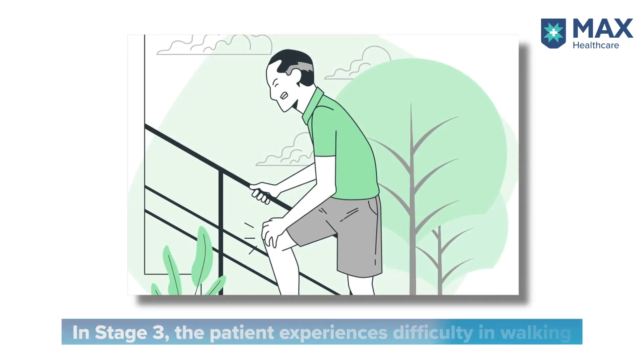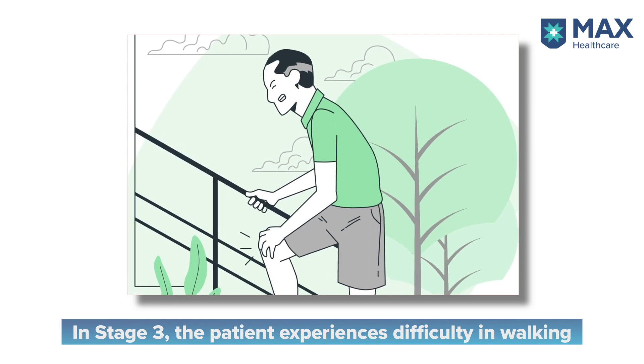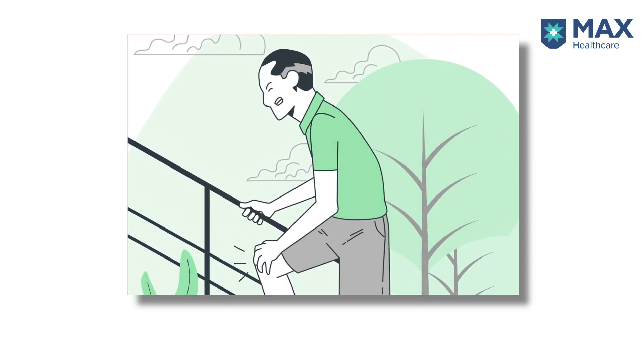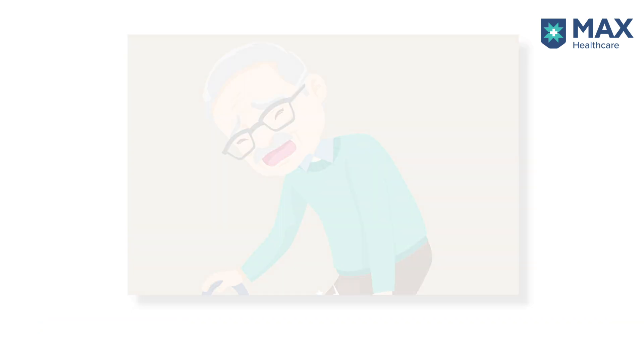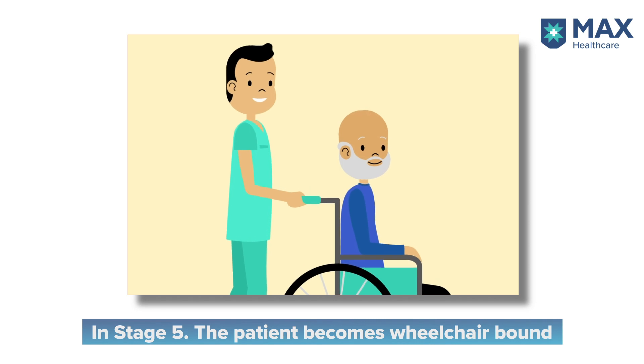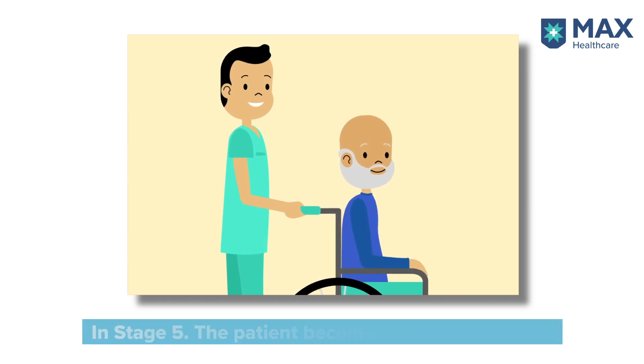This is the stage where the patient should get treatment as early as possible. Then comes the moderate stage, which is stage 3, where the patient will start to have difficulty in walking but can still walk unassisted. Then comes stages 4 and 5, which is the advanced stage. In stage 4, the patient can walk unassisted but has severe disability. In stage 5, the patient becomes wheelchair-bound or bedridden and requires palliative care.